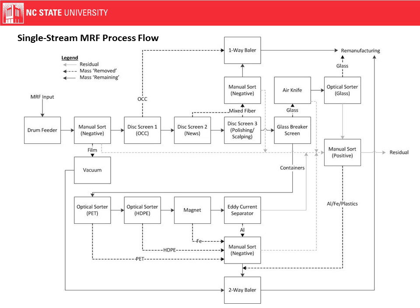Here is a process flow diagram for our default MRF configuration. It's important to note that this is a very technical, modern MRF. A lot of these boxes represent automation, while some represent manual sorts. At a high level, we pull out fiber using disc screens first, then pull out glass using a glass breaker screen and optical sorting technology. From there, the stream goes to plastic optical sorters as well as a magnet and eddy current separator. It's very complex, and due to time constraints we'll skip through this — please ask questions at the end.